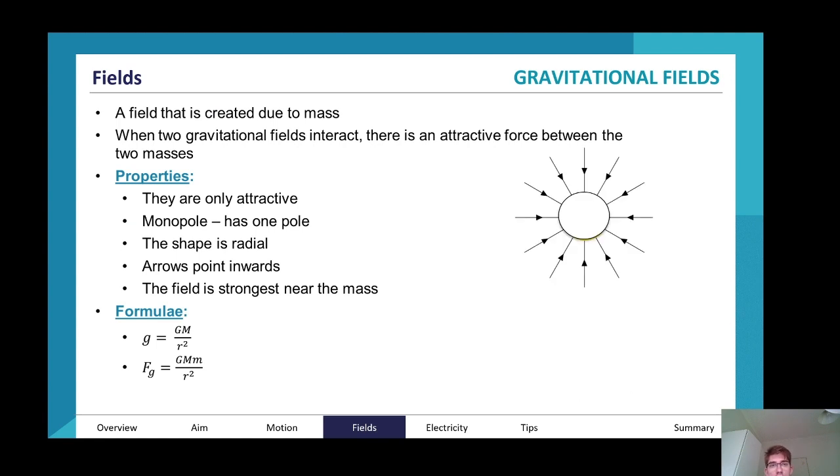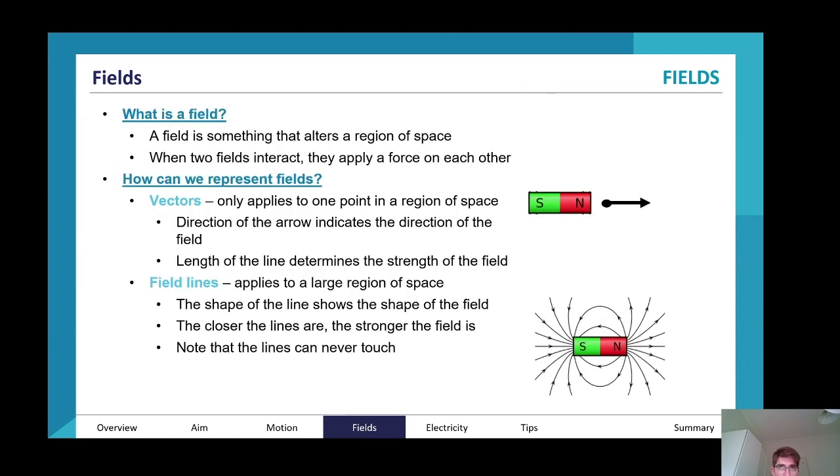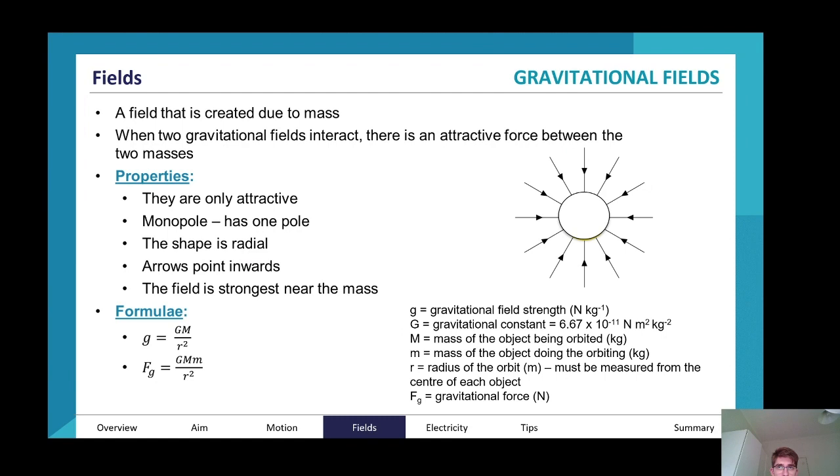When we're talking about gravitational fields, some properties you need to know: there are going to be three types of fields - gravitational, electric, and magnetic. The properties are that they are only attractive fields. A monopole has one pole. For gravitational fields, the shape is radial, the arrows point inwards, and the field is stronger near the mass. The formulas for gravitational field are g = GM/r² or g = GM/r². I'm going to explain what all of them mean - you have them on the bottom right inside as well.